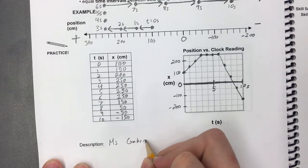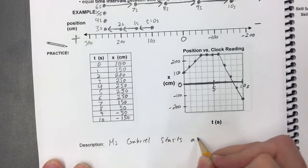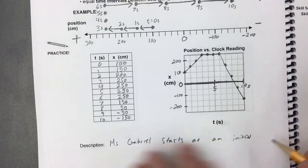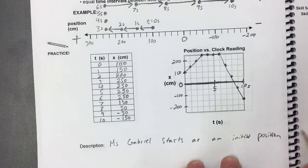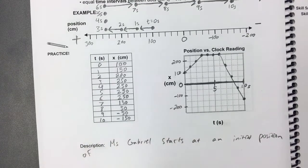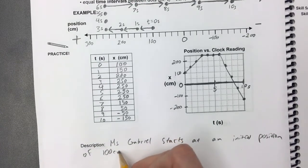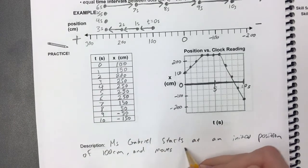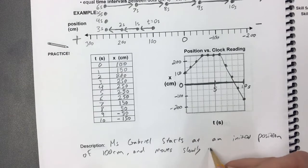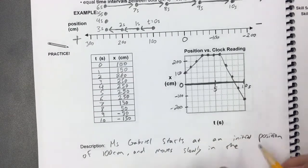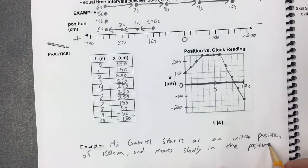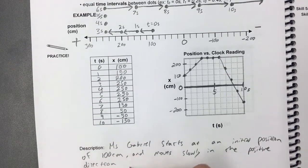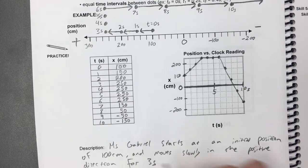Let's start like this. We can say Ms. Gabriel starts at an initial position of 100 centimeters